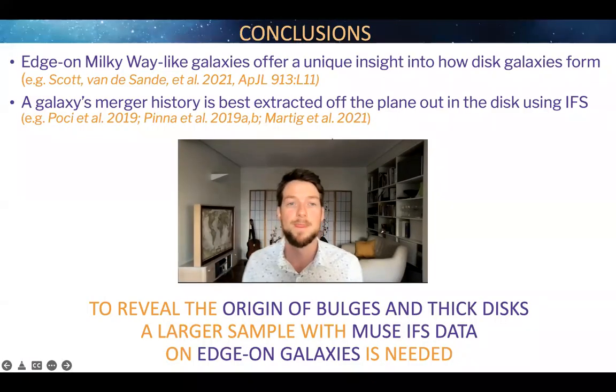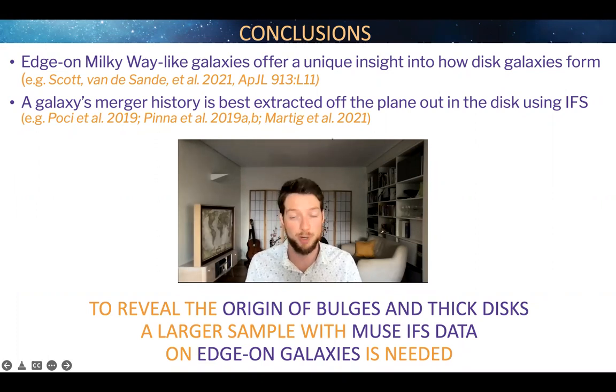So to conclude, I think that edge-on Milky Way-like galaxies offer a unique insight into how disk galaxies in general form. If we want to learn something about our own Milky Way, we need to look at other possible scenarios in disk galaxy assembly. Edge-on galaxies also offer a unique view on how the bulges and thick disks might have formed, because when you look at minor merger accretion events, these are actually best extracted off the plane of the disk out in the disk, meaning going far out and up above. The reason for it is that minor mergers leave their imprint in the thick disk, which is hard to pick up when you look at a galaxy face-on.